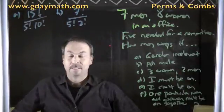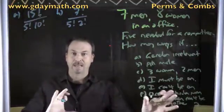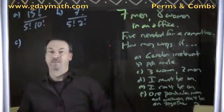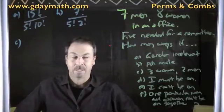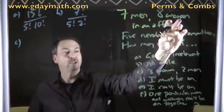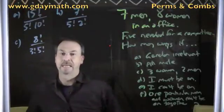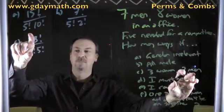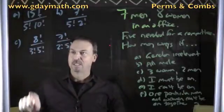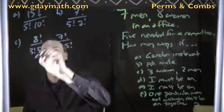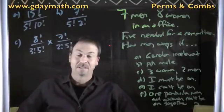Part C: suppose the committee must consist of three women and two men. It's a two-task problem. Task one — deal with the women: there are eight women in total, three need to be on the committee. Three will be labeled 'on' and five will be labeled 'lucky.' Task two — deal with the men: there are seven men in total, two will be labeled 'on' and five will be labeled 'lucky.' By the multiplication principle, I multiply those two answers together.